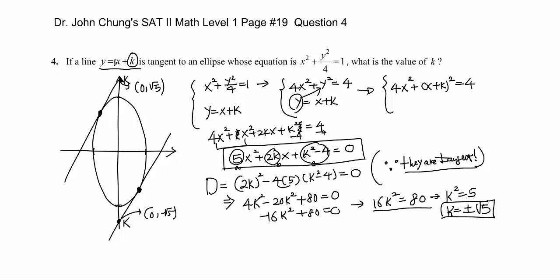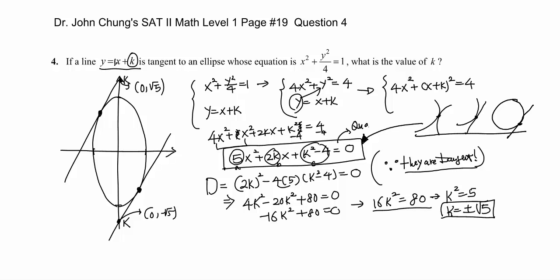To summarize: the meaning of tangent between a curve and a line — or even curve and curve — is that when you combine them into a final quadratic equation, the discriminant of that quadratic must equal zero. This applies to circles, ellipses, and any curve. That's the key concept. Thank you so much, have a good day!